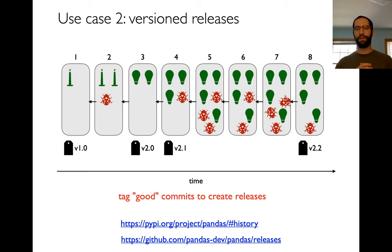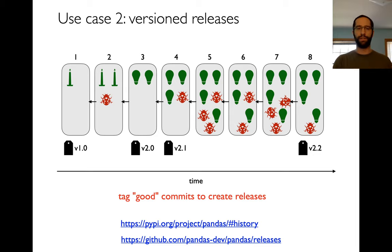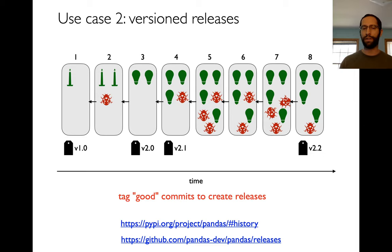Typically on a project under active development, the development team is always on the latest version, but outsiders choose which version to use. Developers go through and tag good commits: commit one is version 1, commit three is version 2, commit four is version 2.1, commit eight is version 2.2. They tell outsiders: unless you're programming the project, choose one of these four — it doesn't make sense to use version seven. In version control systems, there's often the ability to tag specific commits, and that's how you release a version of your software.